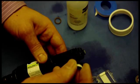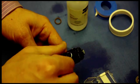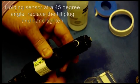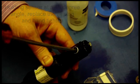Now I need to grab the fill plug which I made sure there was enough pipe tape remaining on. I keep the sensor at about 45 degrees so the solution does not spill out and I begin tightening it.